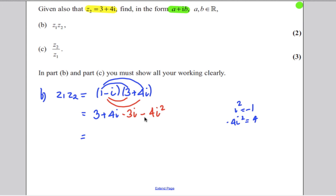So therefore 3 add the 4 must be 7, and 4i subtract 3i is simply 1i. And we've done that part for two marks.